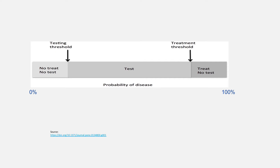In this diagram we can see different threshold points at different levels of pre-test probability. The first threshold point is the testing threshold. If pre-test probability is below this point, we do not perform a diagnostic test for that condition. For example, if we have a 25-year-old previously healthy male patient with one day history of fever, cough, and right-sided pleuritic chest pain, we will not perform a diagnostic test for acute coronary syndrome.